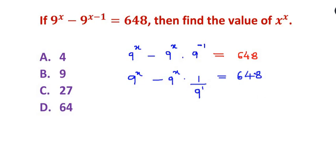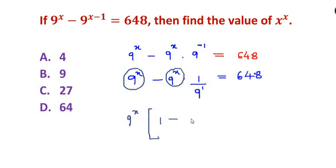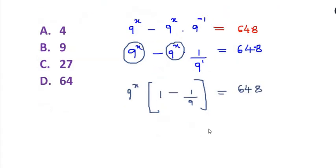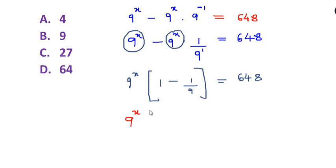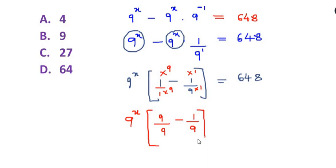Next, I'm going to factorize the left-hand side. I can see that 9^x is common in both terms, so I take 9^x out. Inside the bracket, one is left from the first term, minus 1 over 9 from the second term, equal to 648. We solve the bracket using LCM: multiplying to get 9 over 9 minus 1 over 9.